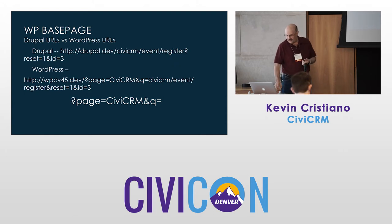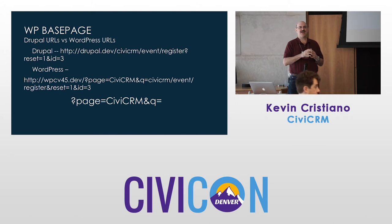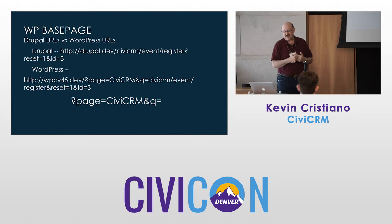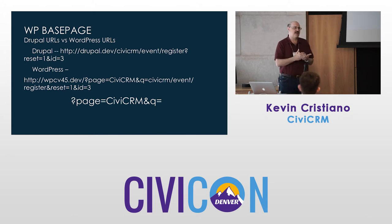The WordPress base page: what is it? In Drupal, the user-facing site and the admin — there's no real difference between front end and back end. In WordPress there's a world of difference, and the way that URLs are built is completely different. In Drupal you'll see the site name, CiviCRM event register, the ID. In WordPress, out of the box, you get CiviCRM as a query string — CiviCRM event register — and this causes some non-optimal behavior.